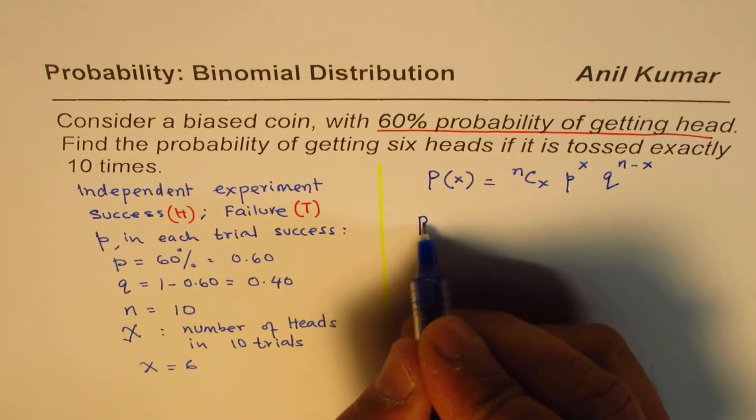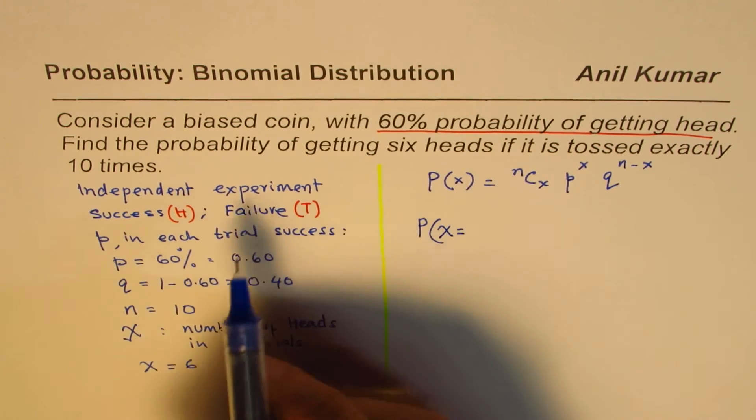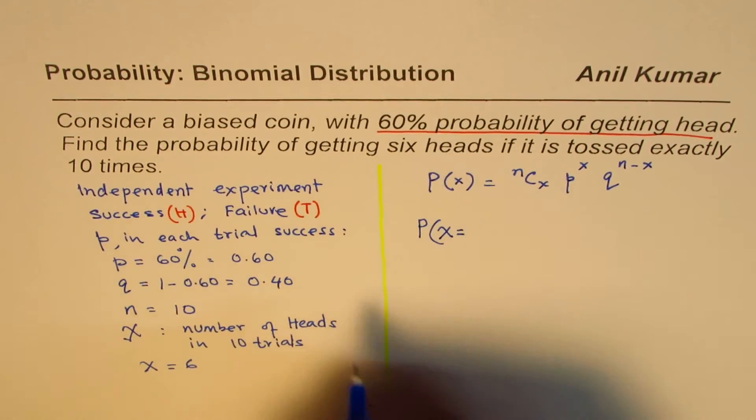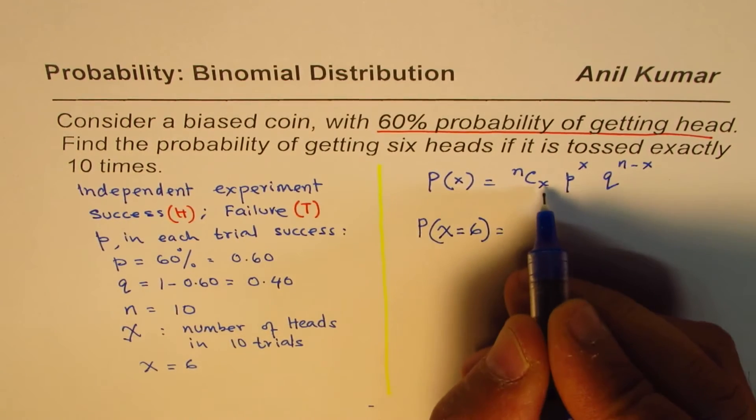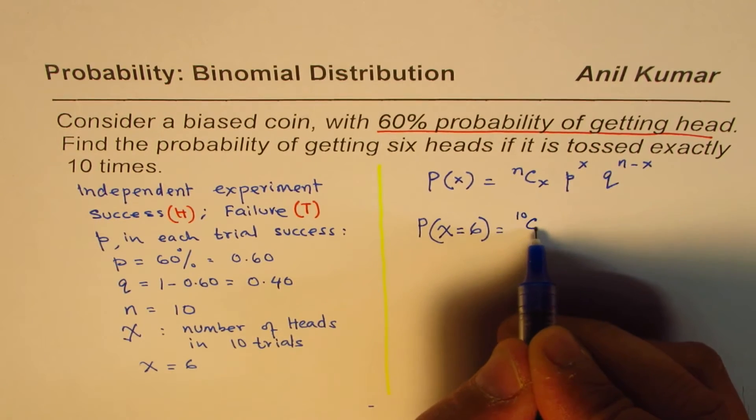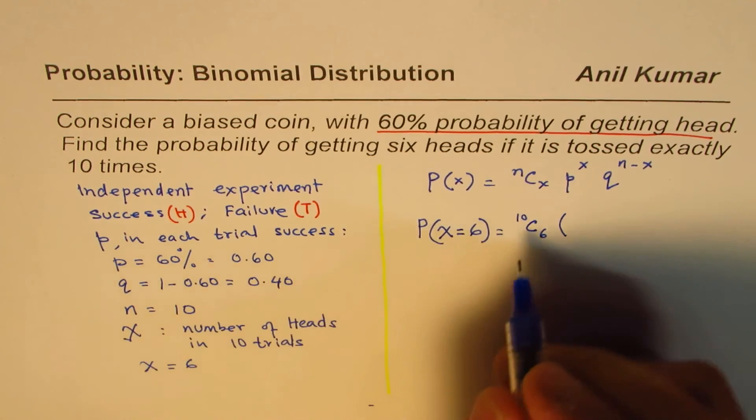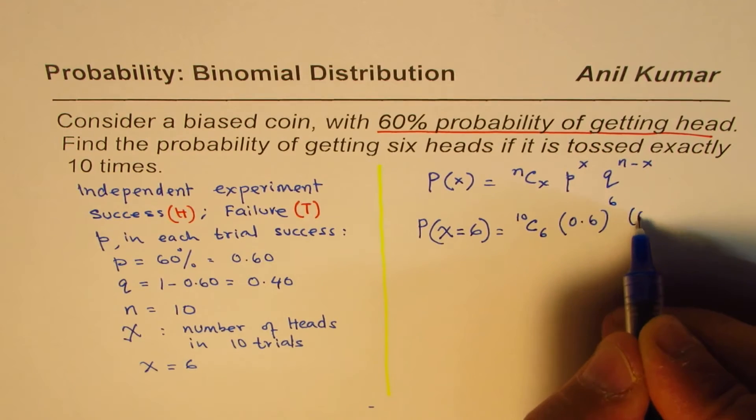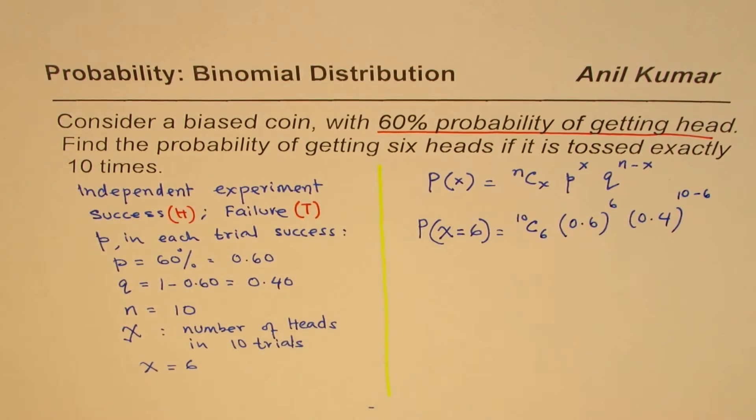We are looking for probability when this parameter X equals 6. So the small x is 6, n is 10. All these values are known to us. So 10C6, p is 0.6 to the power of 6, q is 0.4, and it is 10 minus 6.